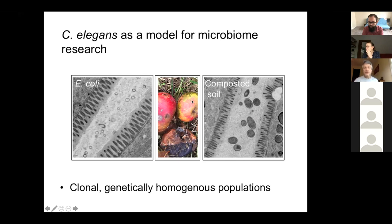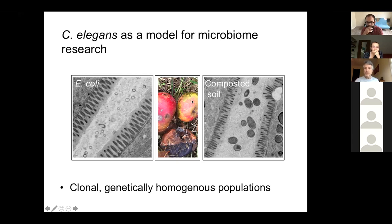The question is: how do worms raised in such environments look? On the right-hand side, you see the gut of worms raised on composted soil — soil simply with rotten organic matter. You can see that there are different-looking bacteria inside that gut. So it seems that C. elegans does have some interactions with bacteria. The question is: which are those bacteria and what are those interactions?